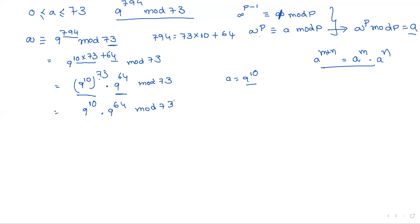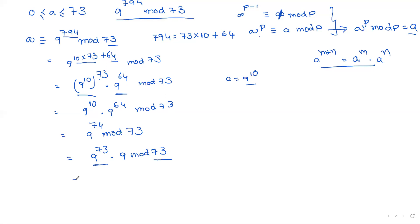Now 9^74 mod 73 is written as 9^73 · 9 mod 73. Since a^p mod p = a, this gives 9 · 9 mod 73 = 81 mod 73 = 8. So 8 is the final answer.